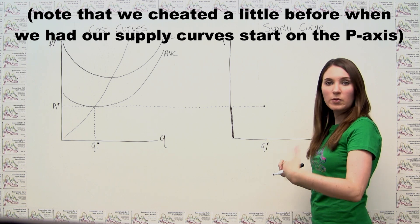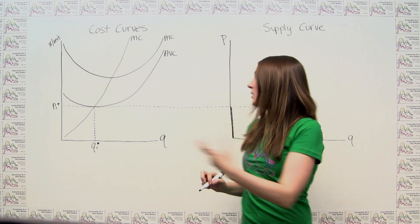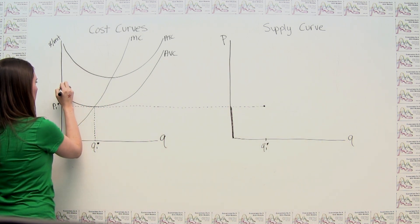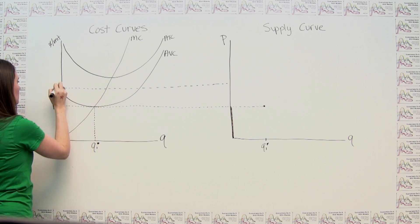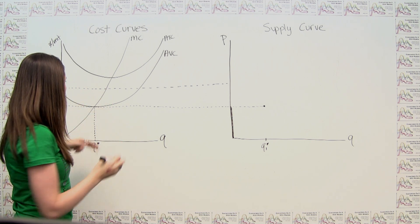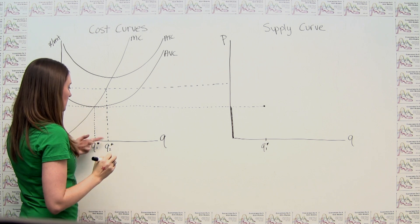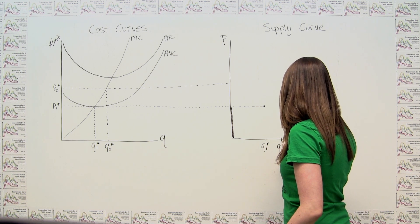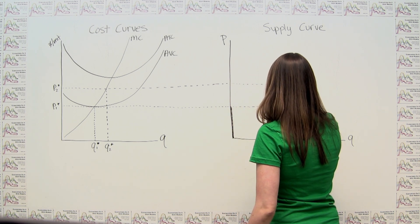Now we can think about what happens as price continues to increase. As price increases, we're going to be producing more and more output. Let's consider a point P2 somewhere higher. The firm sets quantity such that price equals marginal cost, giving us Q2 star. Noting Q2 star on the supply curve graph, with P2 star up here, our next point on the supply curve is plotted.